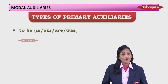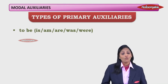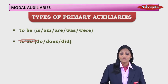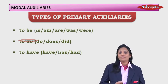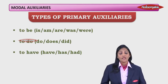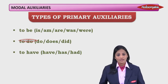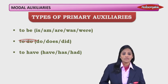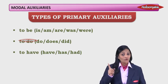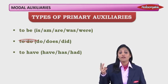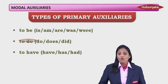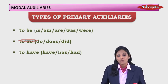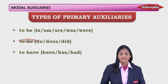Examples of primary auxiliaries: the 'to be' forms — is, am, are, was, were. The 'to do' forms — do, does, did. The 'to have' forms — have, has, had. The 'to be' form is used to create a continuous tense, like 'is writing' or 'are playing', or a passive voice. The 'to do' form shows emphasis, negation, or a question. The 'to have' form is used to show the perfect tense and perfect continuous tense.